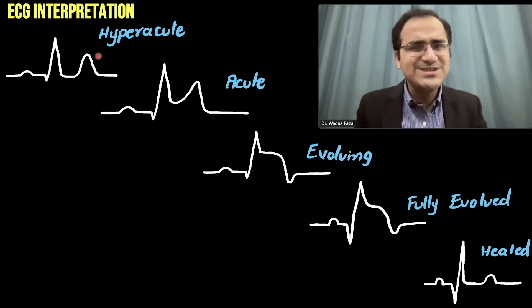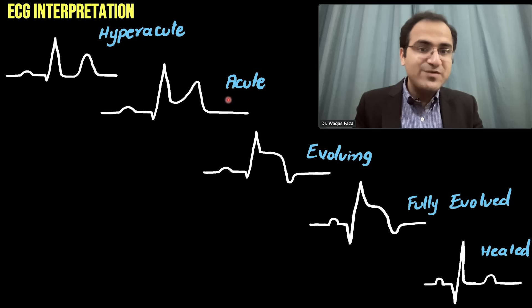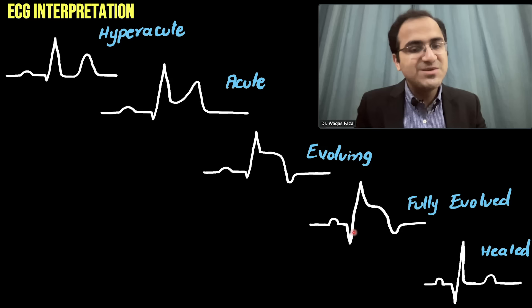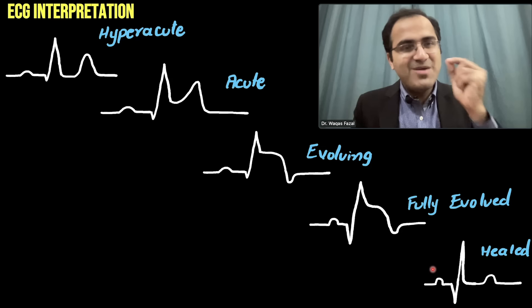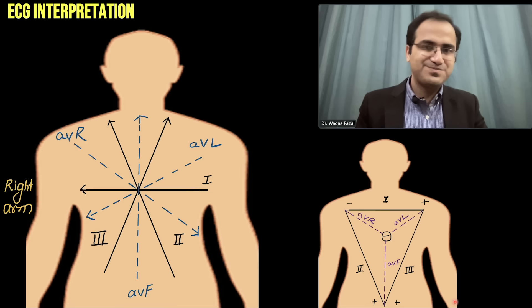To summarize the phases: initially there is T wave elevation — hyper-acute phase. Then ST segment elevation with peaked T waves — acute phase. After that, T wave inversion with ST segment elevation — evolving phase. Then the fully evolved phase with pathological Q waves. Finally, everything reverses but the pathological Q wave remains as the single marker and memory of a previous MI — showing the scar tissue.